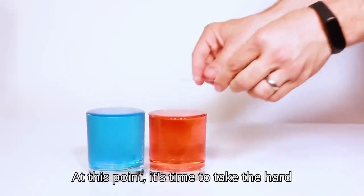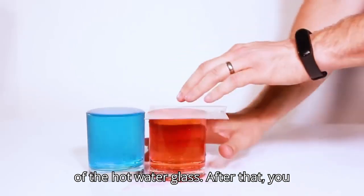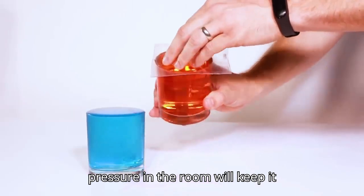At this point, it's time to take the hard, flat piece of plastic and put it on top of the hot water glass. After that, you can flip it upside down and the air pressure in the room will keep it attached to the glass.